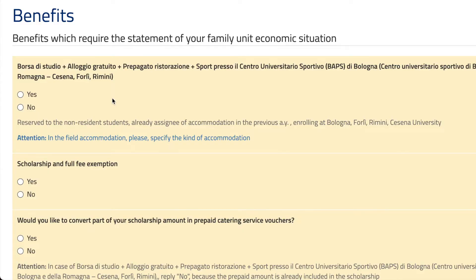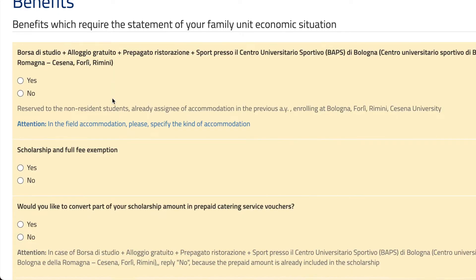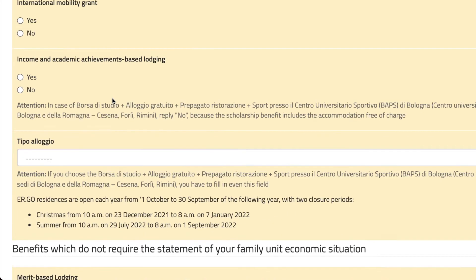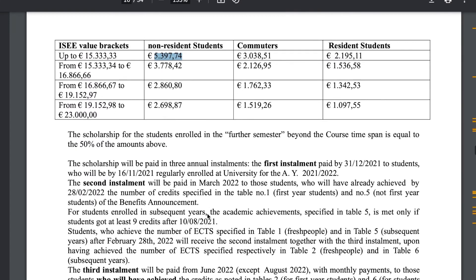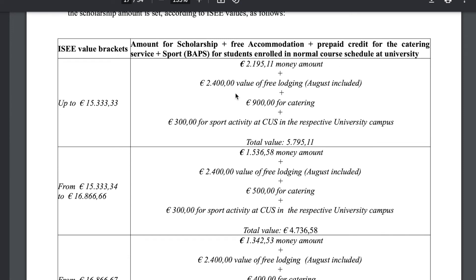In this section they ask how you want your scholarship to be distributed. The first option lets ERGO manage your money — if you have up to a certain ISEE value, they give you a portion in your bank account and convert the rest. So you won't see this money, but you'll have free lodging. In reality it's not free — this is the amount you're paying, and you won't see this money.